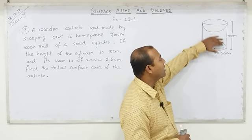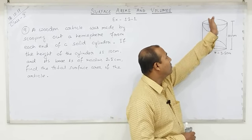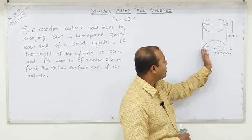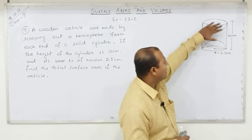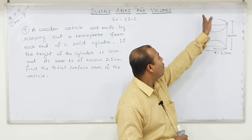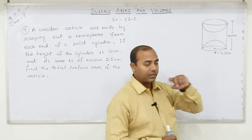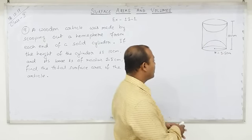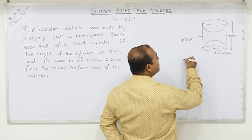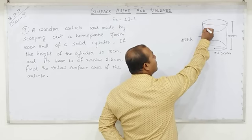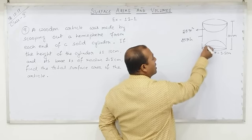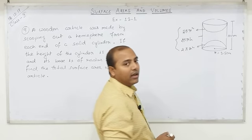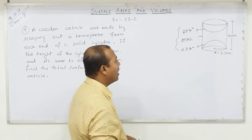At present the surfaces are: the cylinder's curved surface area is still present because scooping happened at the top and bottom faces. The upper circular face was removed and a hemisphere formed there; the lower circular face was removed and a hemisphere formed there. So three faces remain: cylinder curved surface area, upper hemisphere curved surface area, and lower hemisphere curved surface area.